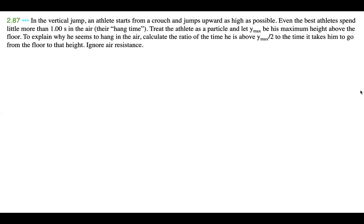In the vertical jump, an athlete starts from a crouch and jumps upward as high as possible. Even the best athletes spend little more than one second in the air — their hang time. Treat the athlete as a particle and let Y_max be his maximum height above the floor. To explain why he seems to hang in the air, calculate the ratio of the time he is above Y_max over 2 to the time it takes him to go from the floor to that height. Ignore air resistance.